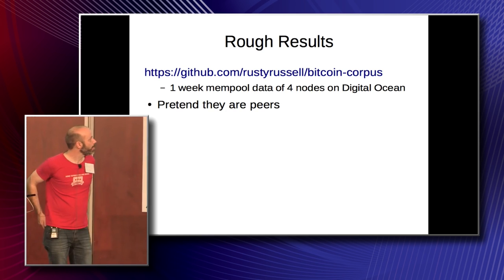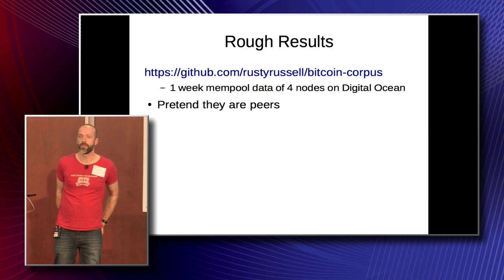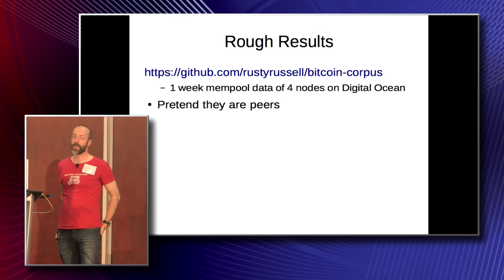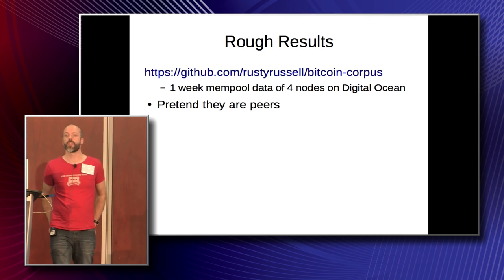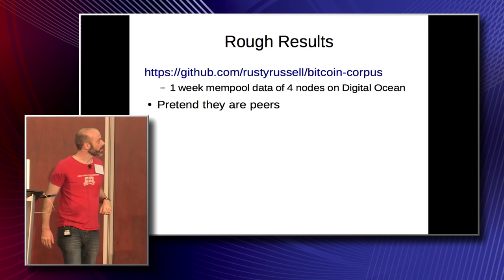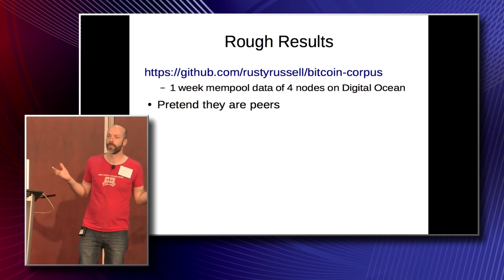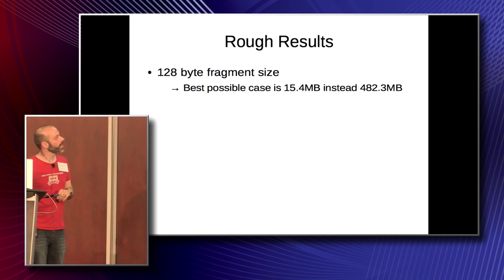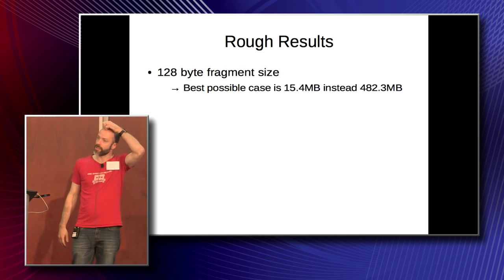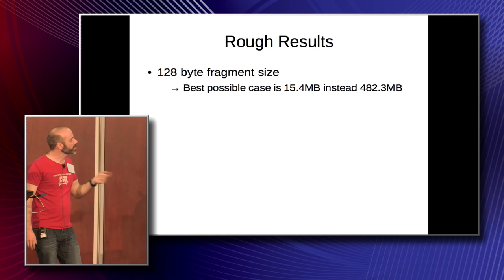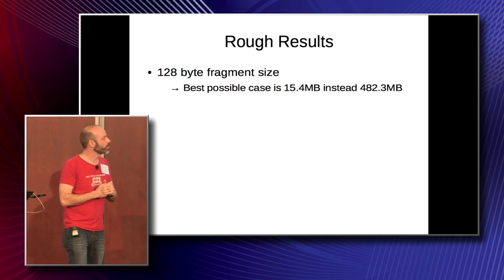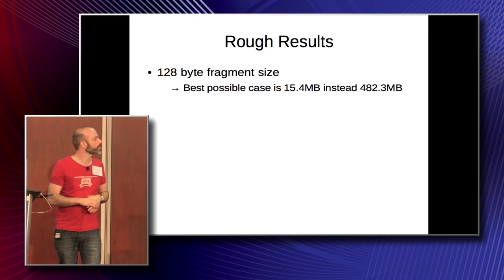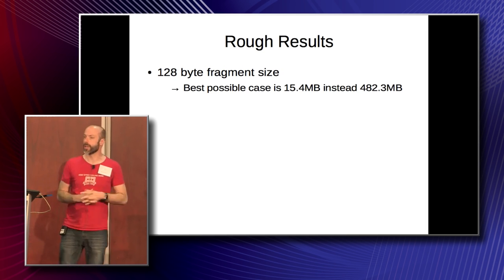So if you try this — about six months ago I hacked up Bitcoin Core to dump mempools every time I received a block and every time I received a transaction, and ran it on four nodes around the world: one in Singapore, one in Australia, two in San Francisco, one of which was on the Relay Network. I have up on GitHub a project called Bitcoin Corpus, which is a week of mempool data for all these nodes. Now, if we pretend they were peers running this protocol, we can simulate what we would expect. Using a 128-byte fragment size — the jury's still out on optimal size, but that seems to be in the ballpark — instead of transmitting everyone to everyone else, which would be about 482 meg, we would send about 3% of that. So there are potentially some real upsides to this approach.